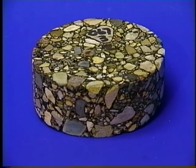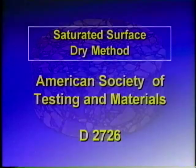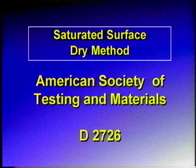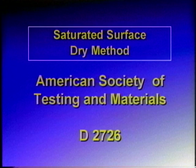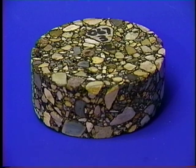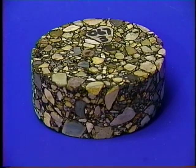The standard procedure for determining air voids is the saturated surface dry method specified by ASTM D2726. After the percentage of air voids is determined, measure the diameter and thickness of the samples.